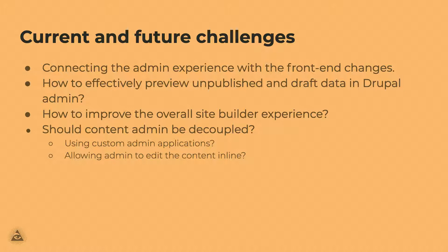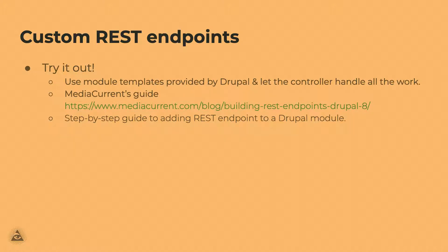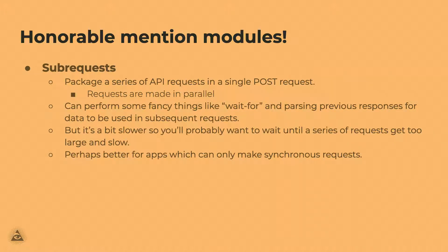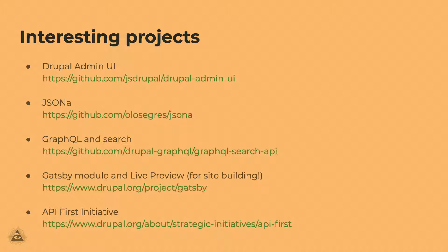Some interesting projects to check out: a custom REST endpoint example is available — please look at that. The Drupal Admin UI is a React admin UI that's not finished but has interesting example code for decoupling. JSON-A is good for consuming JSON API schemas in JavaScript — it outputs a predictable object you can call properties from quite easily. A Gatsby module apparently has a live preview, so if you're using a static site generator with Gatsby, that may have some content preview solutions. And of course the API-first initiative is maturing with issues you can check out.